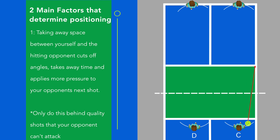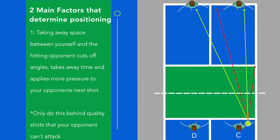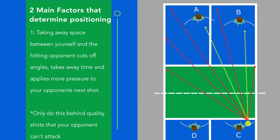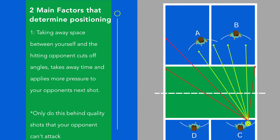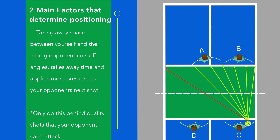Next we have the same thing illustrated in more of a doubles formation. One really important point to this: we're only going to take away space behind good shots. That means if the shot that you hit is low and unattackable, then you're going to follow that up by trying to take away the space between yourself and the hitter and apply more pressure.